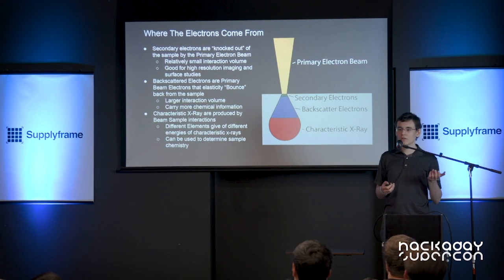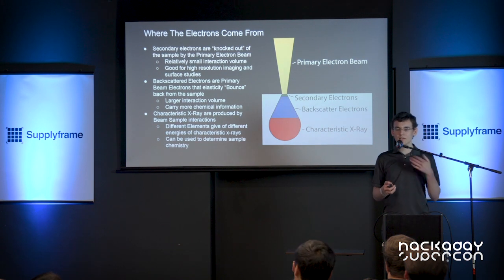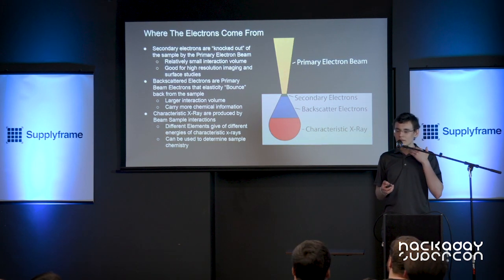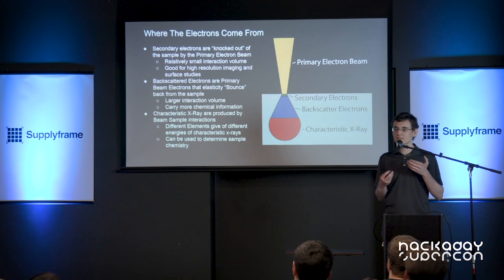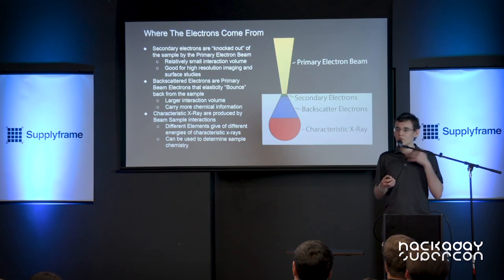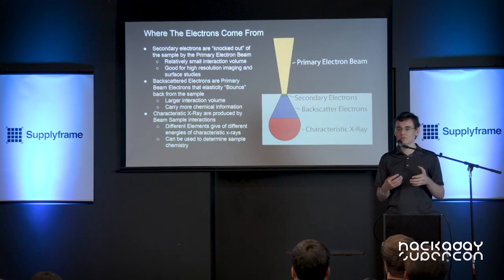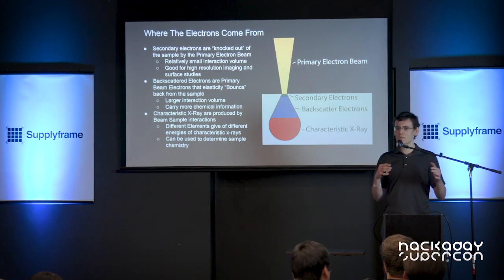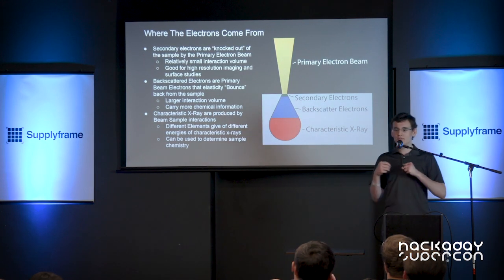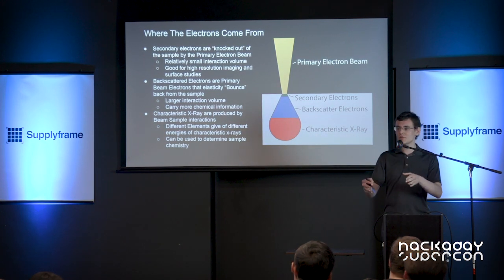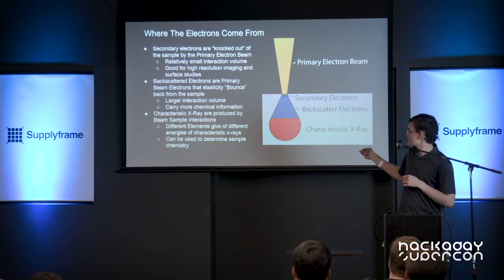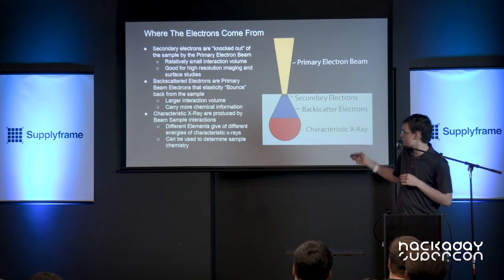The other type of electrons we're going to look at are backscatter electrons. Backscatter electrons are primary beam electrons that are elastically scattered back from within the sample. Because of that, they can carry more chemical information, because atoms with a higher atomic mass will reflect more backscatter electrons. So we can use this to determine some chemical properties of the sample, or if we just want to see a little bit deeper into the sample, we can use those backscatter electrons because they come from that much larger interaction volume.